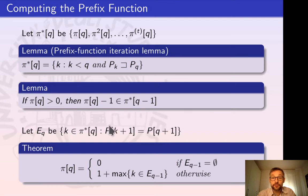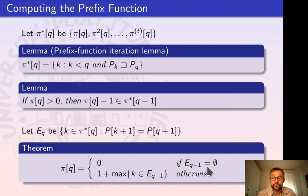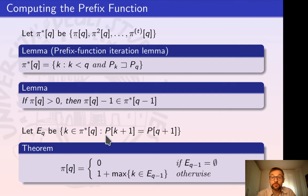Using this set, we can recursively define pi(q). So pi(q) would be zero if the set of proper prefixes of P(q−1) which are also suffixes for it is empty. Otherwise, we search for the largest value of P(q−1) which is extendable by one character, and in that case we increase that value by one.